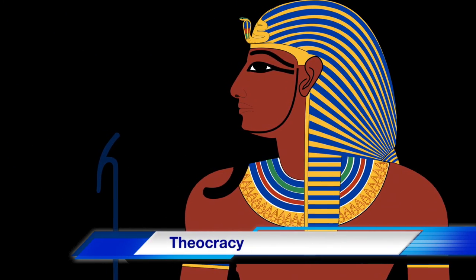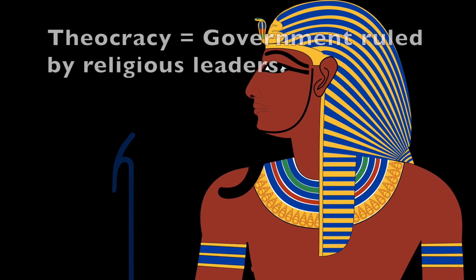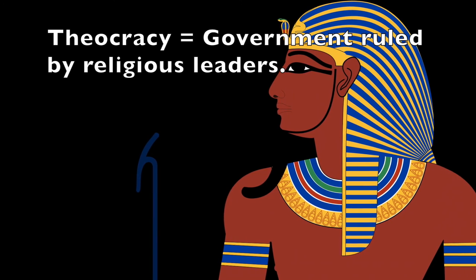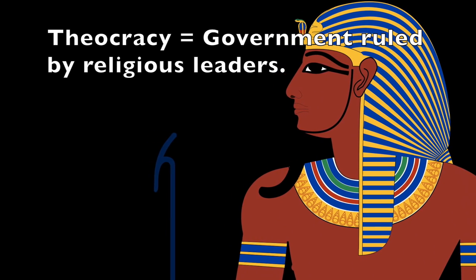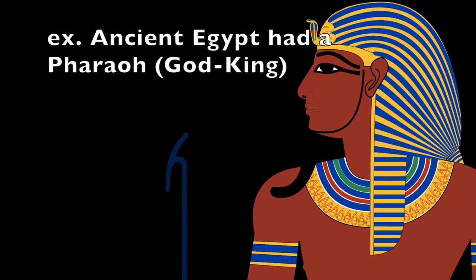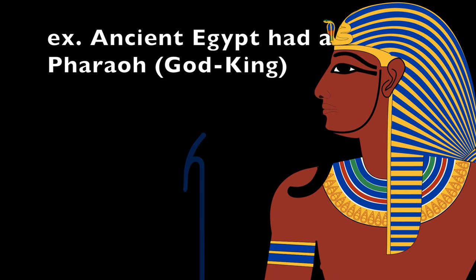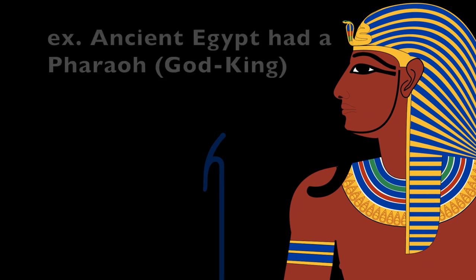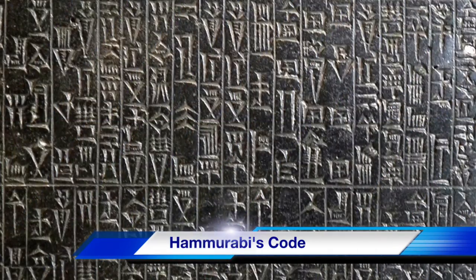Next up is theocracy. Theocracy is a type of government system where religious leaders are in charge. That makes ancient Egypt a great example of a theocracy from the development of early river valley civilizations, because ancient Egypt was ruled by a pharaoh. Pharaohs were supposed to be living gods, or god kings, which meant they were in charge of both the religion and the government — hence, a theocracy.